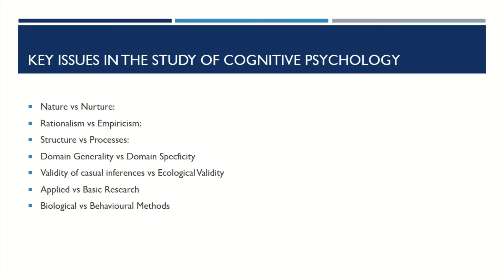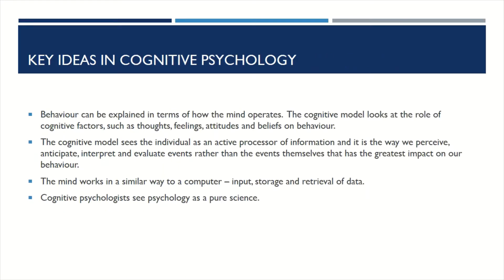Let us now look at the key ideas or concepts in cognitive psychology. Behavior can be explained in terms of how the mind operates. The cognitive model looks at the role of cognitive factors such as thoughts, feelings, attitudes, and beliefs on behavior. It sees the individual as an active processor of information — it is the way we perceive, anticipate, interpret, and evaluate events, rather than the events themselves, that has the greatest impact on our behavior. The mind works in a similar way to a computer: input, storage, and retrieval of data.